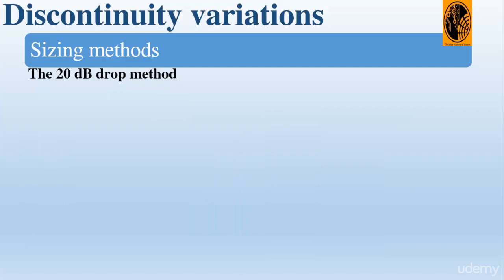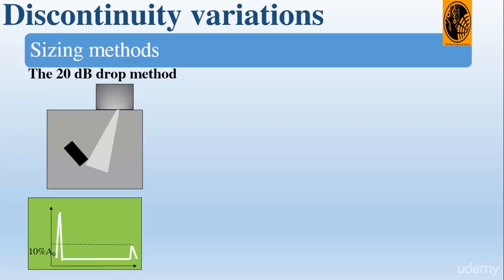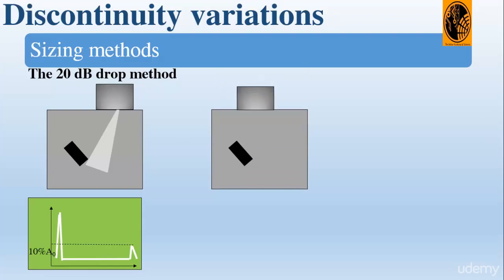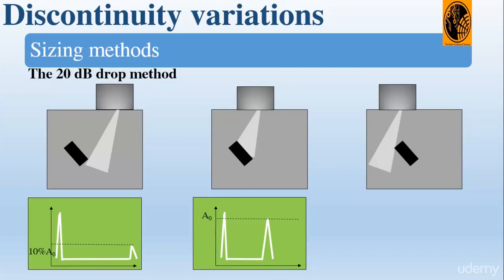Now let's see the 20 dB drop method. We can use a beam plot to find the edge of a defect by using the edge of the sound beam. If we know the width of the beam at a certain distance from the crystal, we can mark the distance across the defect from where the extreme edges of the beam touch each end of the defect, then subtract the beam width to get the defect size. When the signal from the defect drops by 20 dB from its peak, we judge that the edge of the beam is just touching the end of the defect. The peak of the defect is normally taken as the last peak on screen before the probe goes off the end of the defect, not necessarily the maximum signal from the defect.